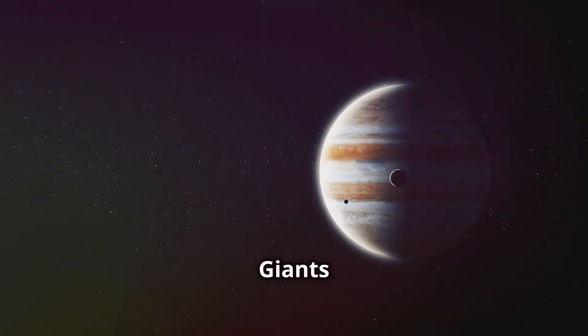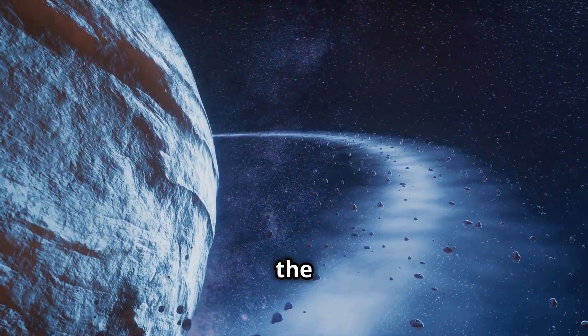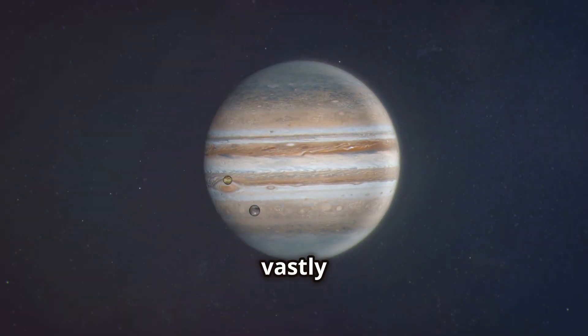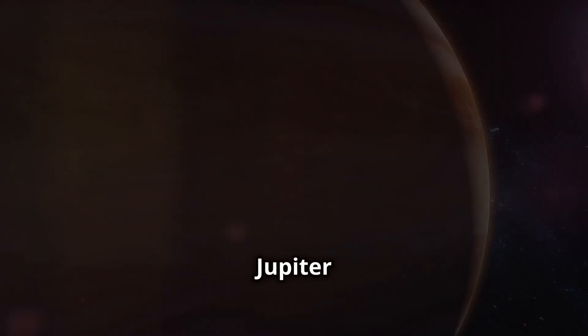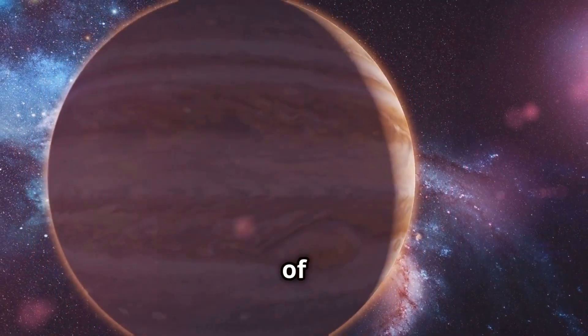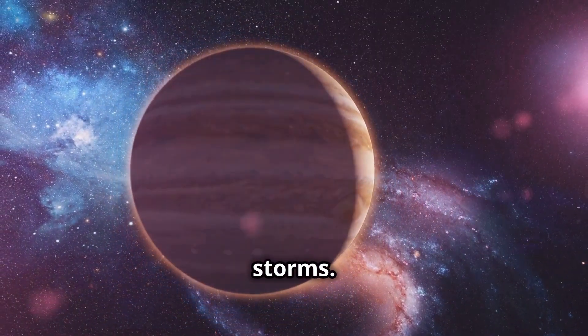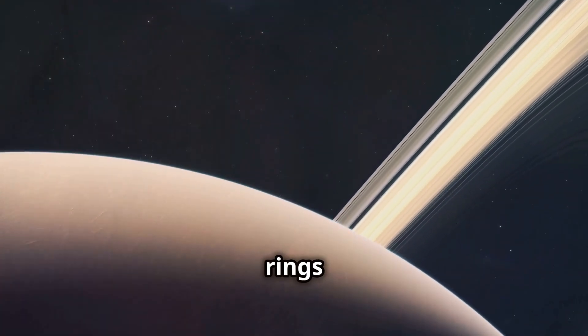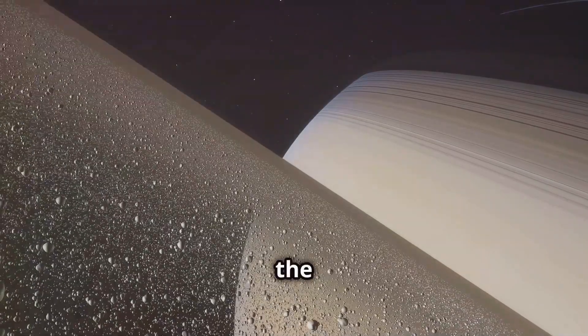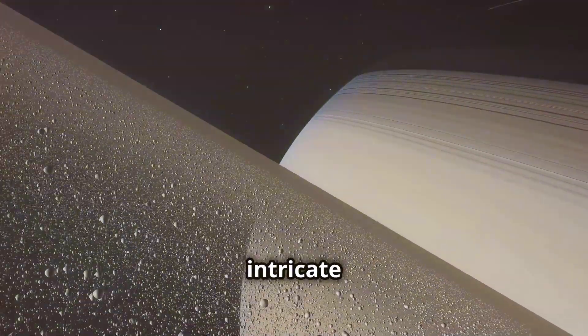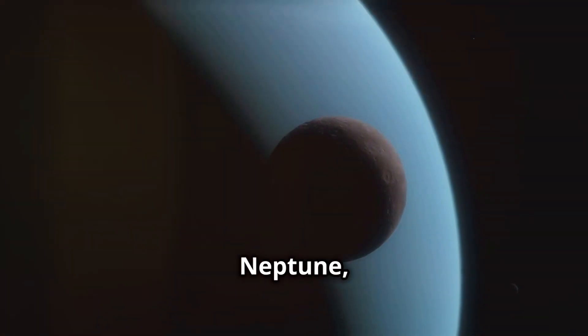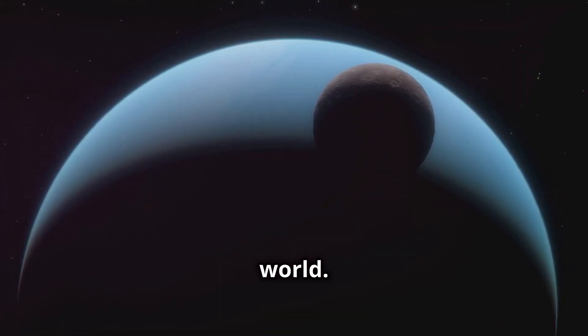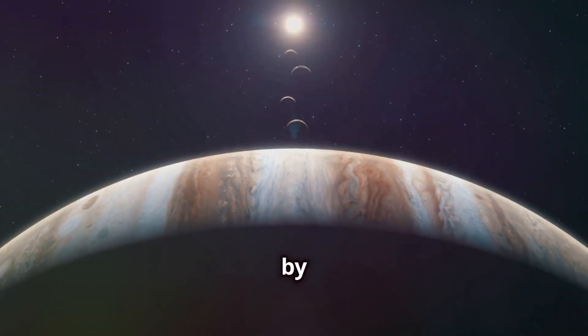The outer giants: gas giants and their entourages. As we venture beyond the asteroid belt, we enter the realm of the gas giants. Jupiter, Saturn, Uranus, and Neptune are vastly different from the rocky worlds of the inner solar system. Jupiter is a swirling ball of gas, its atmosphere a tapestry of colorful bands and storms. The Great Red Spot is a massive storm that has been raging for centuries. Saturn is renowned for its magnificent rings and has a more serene atmosphere. Its rings are a testament to the power of gravity to sculpt matter into intricate structures. The ice giants Uranus and Neptune are more distant and less well-known siblings. Uranus is tilted on its side while Neptune is a deep blue world. These gas giants are orbited by a plethora of moons.